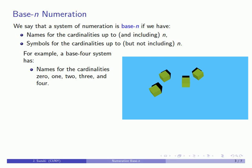We also have symbols for these named cardinalities up to but not including the last one. So we have a symbol for 0, we have a symbol for 1, we have a symbol for 2, and we have a symbol for 3.